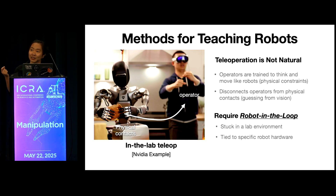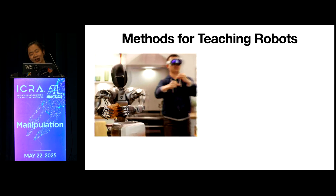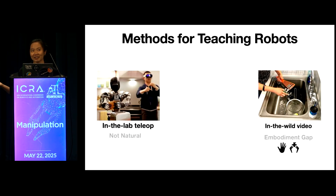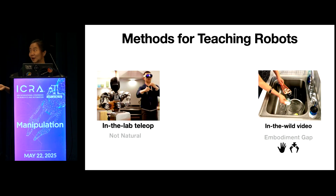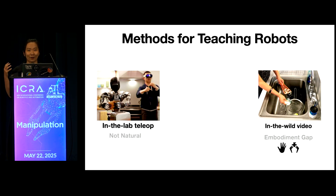The biggest problem is that teleoperation really requires a robot in the loop, so those systems often get stuck in the lab because of hardware requirements and are tied to a particular robot hardware. If you change the environment or update your robot's design, you need to recollect all that data. On the other hand, if you just show your robot a video of you washing dishes, learning is very difficult because of the big embodiment gap between human and robot.